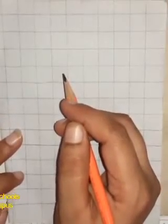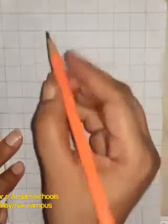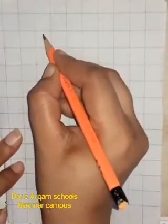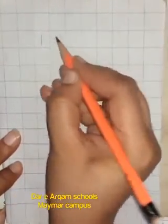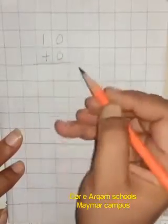Now students, we learn what happens when any number is added with 0. For example, we add 10 with 0. What will happen?